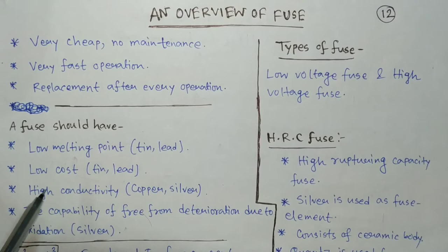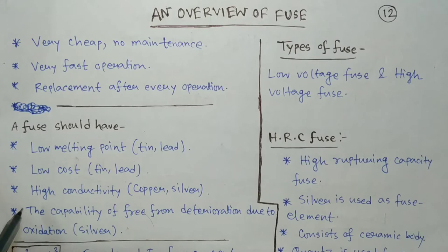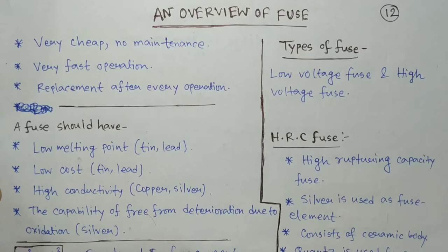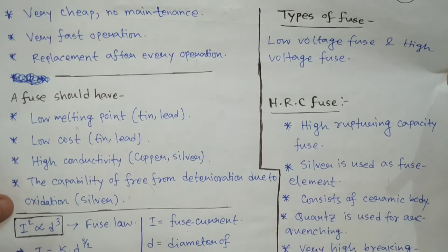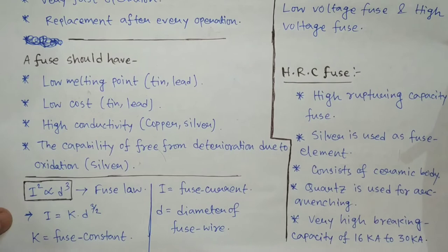Talking about the ideal properties of a fuse: a fuse should have a low melting point like tin or lead. It should also have low cost and high conductivity like copper or silver. Last but not least, the capability of being free from deterioration due to oxidation, like silver.